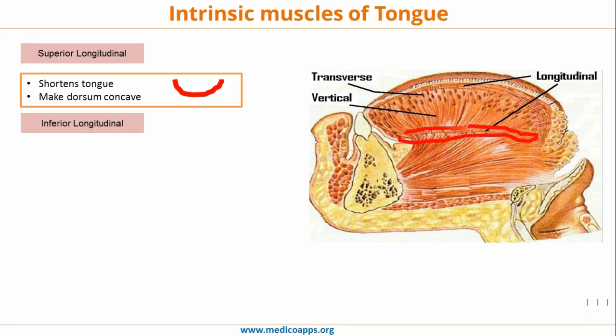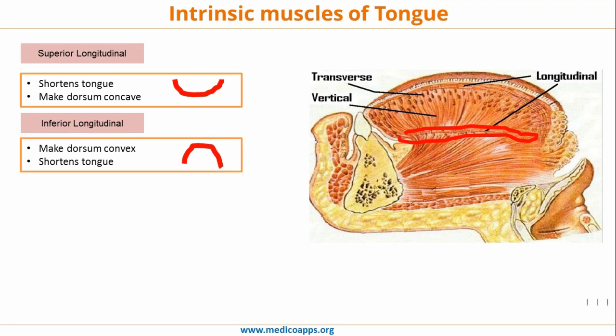The next is the inferior longitudinal muscle, visible in the cross section. Because it is a longitudinal muscle, if it contracts it will make the tongue shorter. Also, because it is on the inferior side, it will make the dorsum convex. So, superior longitudinal makes the dorsum concave, whereas inferior longitudinal, because it is below, makes the dorsum into a convex structure.